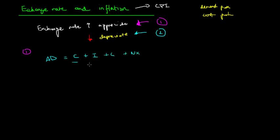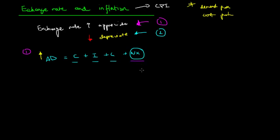Consumption is domestic, investment is domestic savings, government spending is also domestic, but net exports relate to the overseas sector. And that's where the exchange rate has the most prevalent, or the most powerful, impact on aggregate demand. When aggregate demand increases, demand pull inflation occurs. So how does aggregate demand change when net exports change?